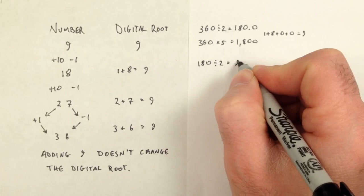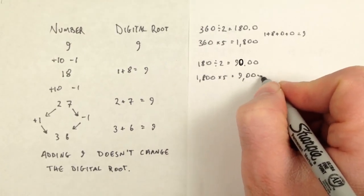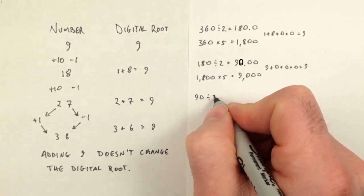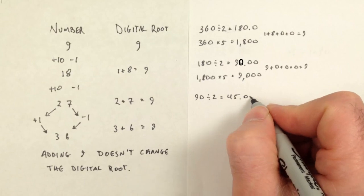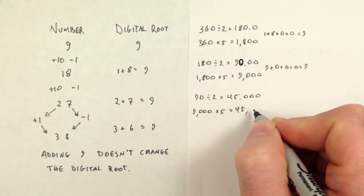To make it easy to understand, think of dividing by 2 as dividing by 10 and then multiplying by 5. That way, dividing by 2 is like multiplying by 5 and moving the decimal place over by 1. The digits stay the same, they just change places.